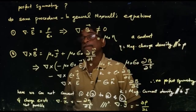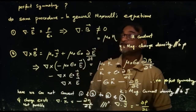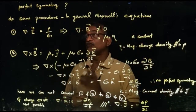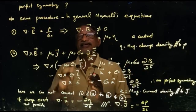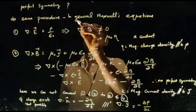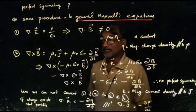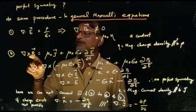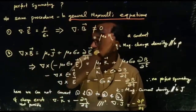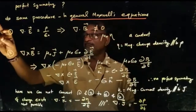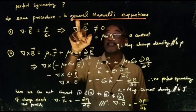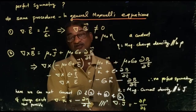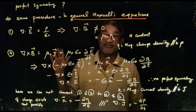So in the case of free space, we have observed perfect symmetry. Now we are trying to find whether there is perfect symmetry in the case of the general Maxwell's equations. If there is perfect symmetry, magnetic charge exists. If there is no perfect symmetry, no magnetic charge is present in the universe.